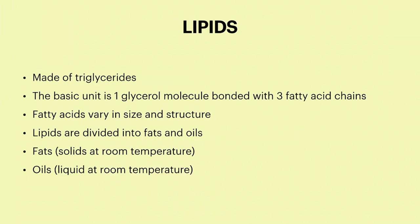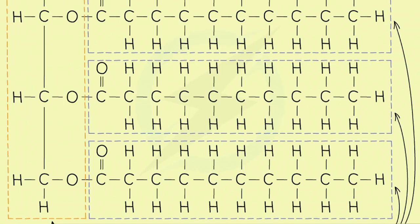Lipids are made of triglycerides. The basic unit is one glycerol molecule bonded with three fatty acid chains, and the fatty acids vary in size and structure. Lipids are divided into fats and oils. Fats are solids at room temperature, and oils are liquids at room temperature. So this is one glycerol molecule with three fatty acid chains.